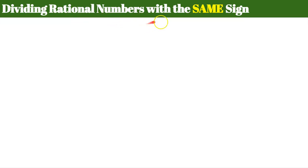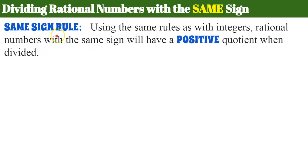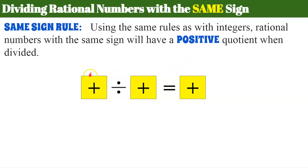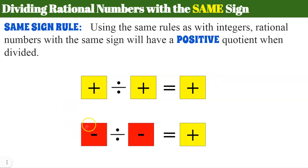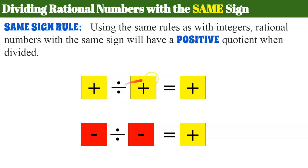Let's review dividing rational numbers with the same sign. Using the same rules as we did with integers, rational numbers with the same sign will have a positive quotient when divided. So if we have a positive value divided by a positive value, it will equal a positive number. If we have a negative value divided by a negative value, it will equal a positive. Same sign, both positive — positive quotient. Same sign, both negative — positive quotient. For rational numbers, any time you are multiplying or dividing with the same sign, you will have a positive product or a positive quotient. Today, we're going to focus on division.